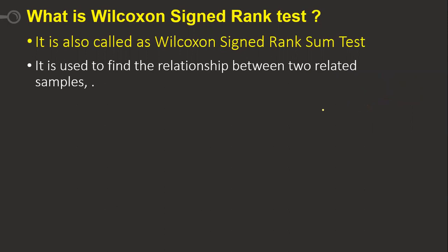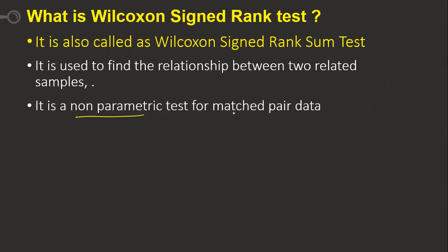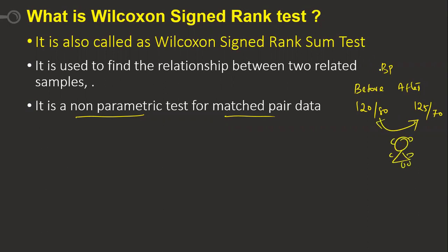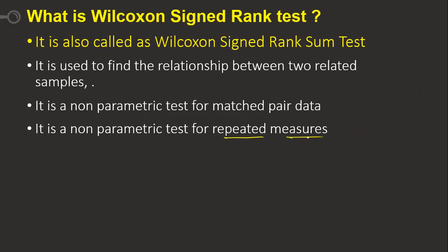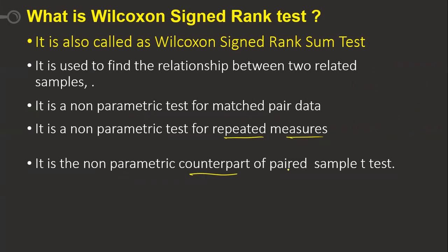It is a non-parametric test for matched pair data. For example, measuring blood pressure before and after giving a BP tablet — say 120/80 before and 125/70 after — those are matched pair values recorded for the same person. It is also used for repeated measures and is the non-parametric counterpart of the paired sample t-test.